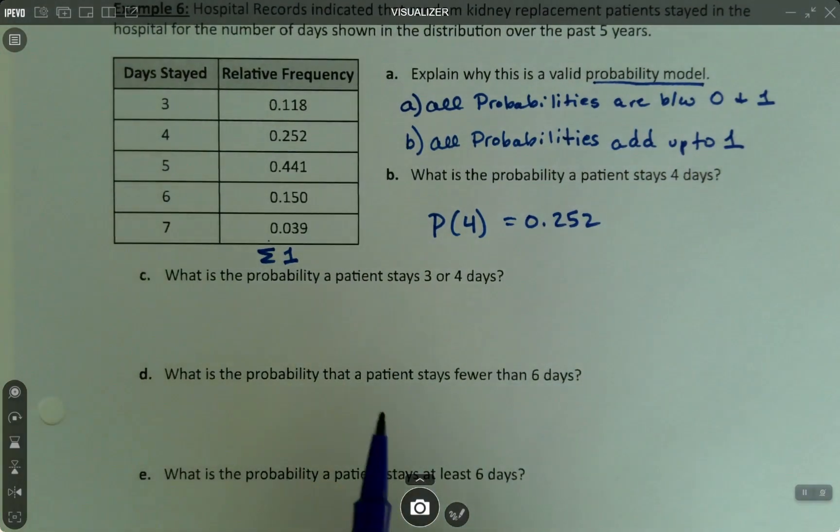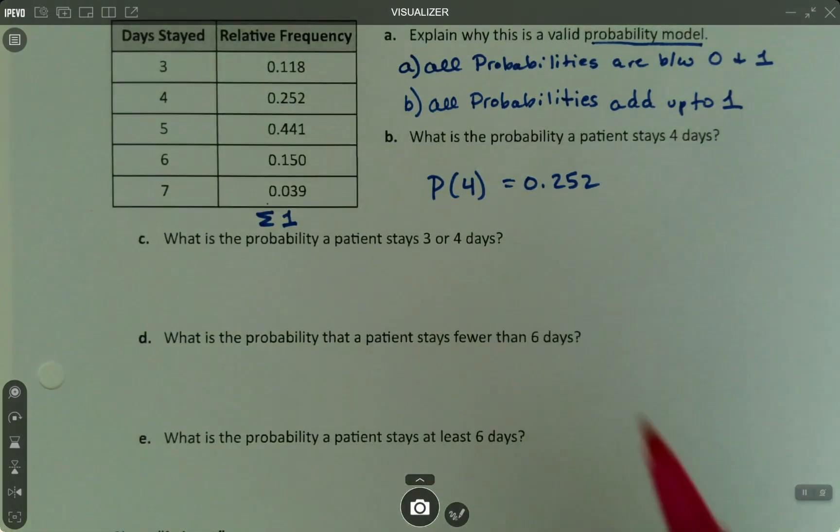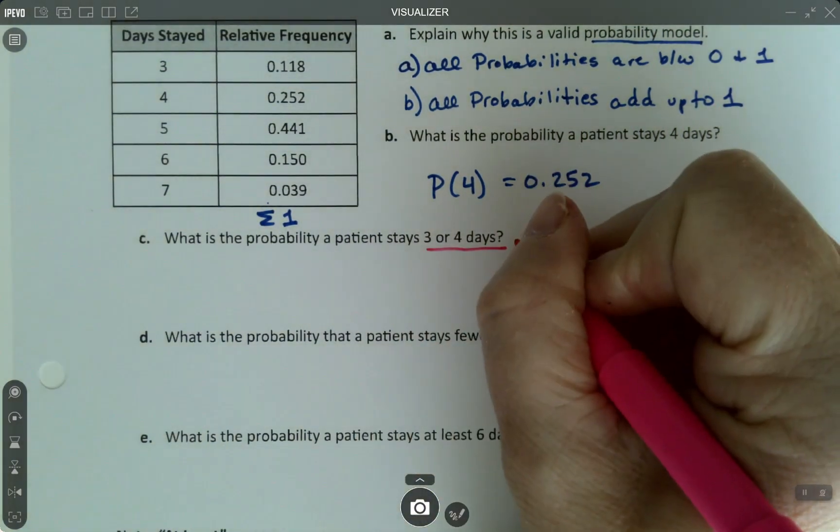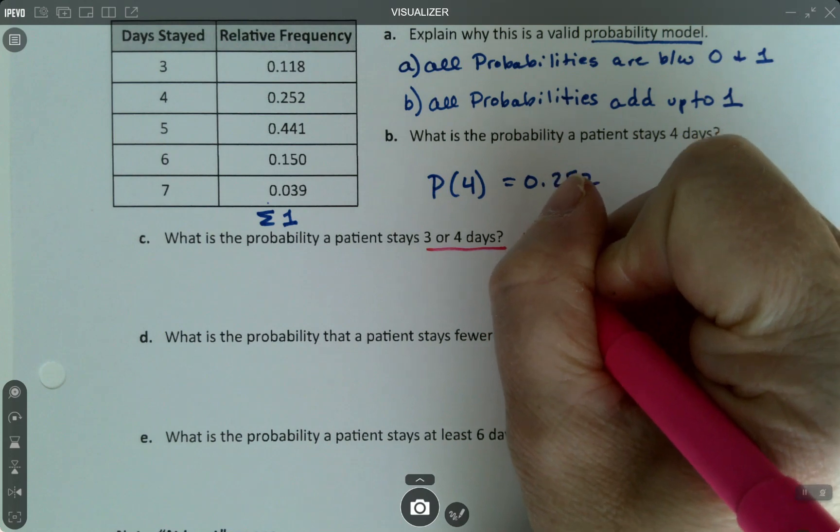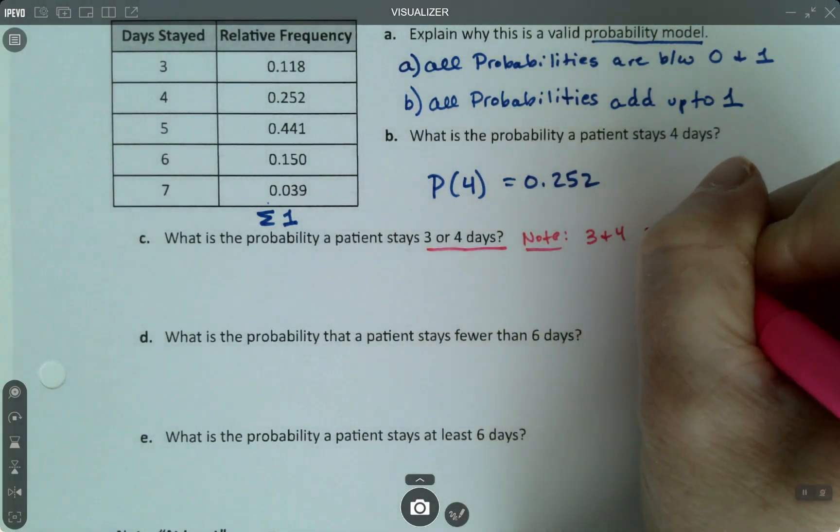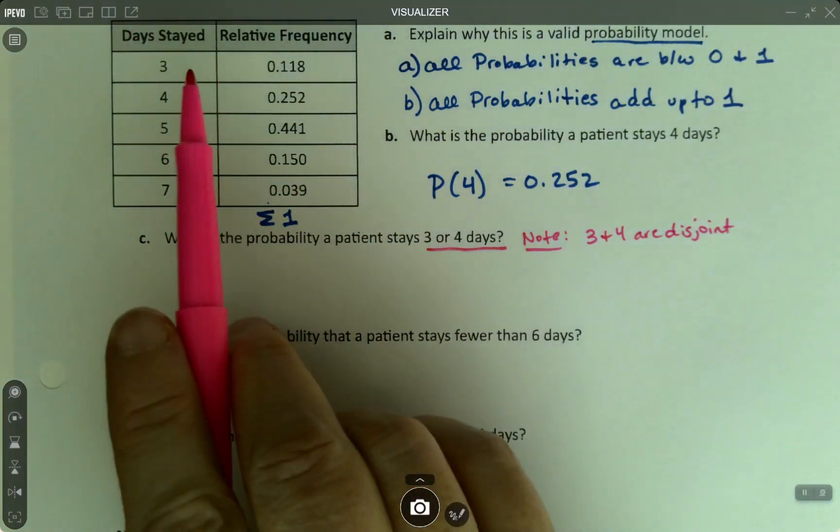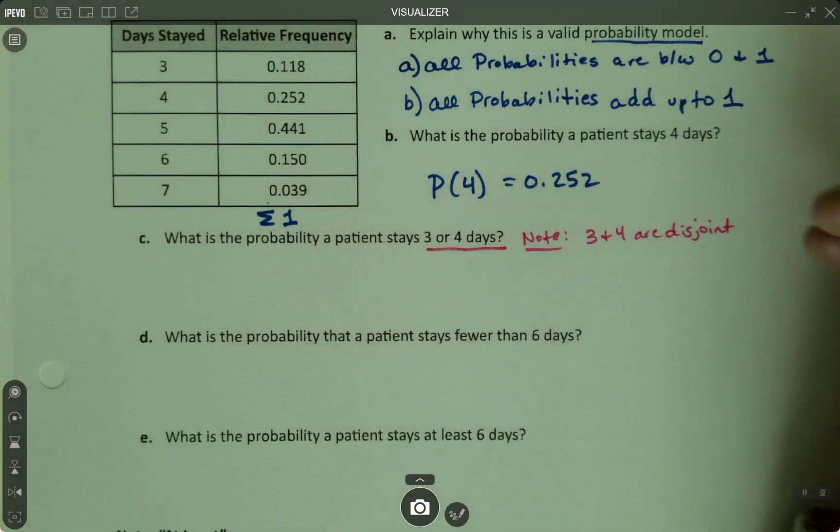Now, what is the probability a patient stays three days or four days? And I realize I should add something in here, and I often do ask a question about this. So let's make a note. Three and four are disjoint because a patient can't stay for both at the same time. They either stay three days or they stay four days, but they can't stay both.